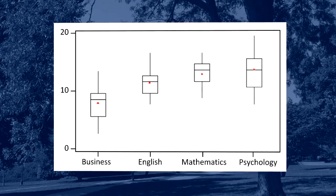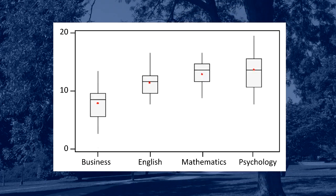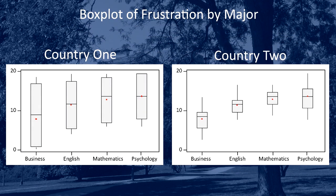That is, students in country 1 and students in country 2 both show data for four groups, with the sample means of 7.3, 11.8, 13.2, and 14.0, indicated with red marks.